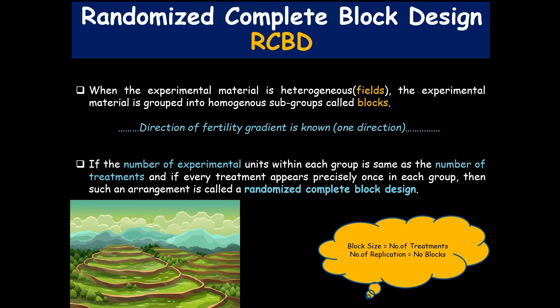There are some important conditions for implementation of this design. The first condition is the identification of the fertility gradient. Suppose we want to evaluate different varieties or different treatments in fields — we need to identify the fertility gradient and in which direction it is moving. It should always be moving in one direction.